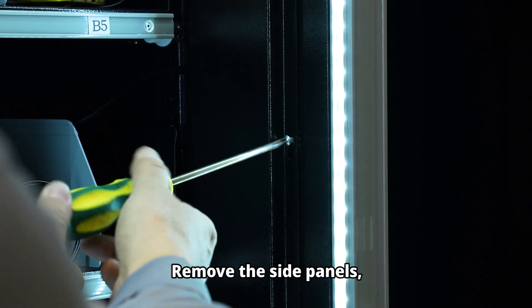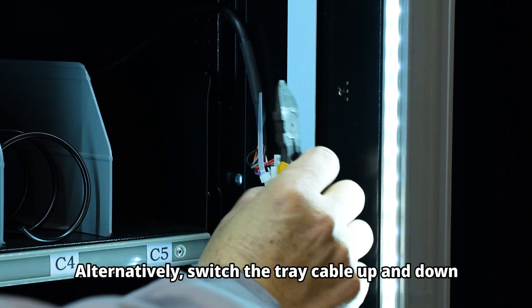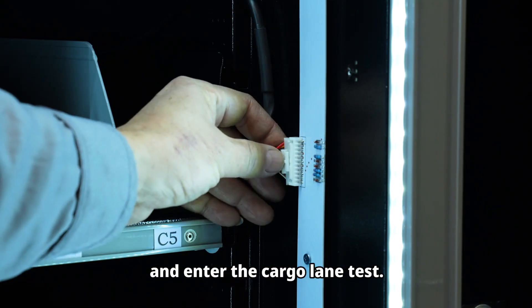Remove the side panels, cut the cable ties and press the tray cables tightly. Alternatively, switch the tray cable up and down and enter the cargo lane test.